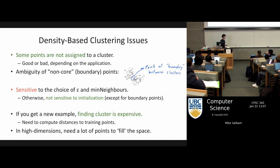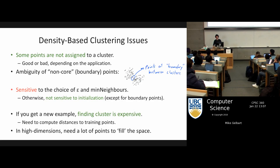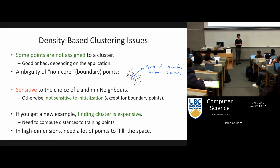Is DBSCAN O(n²)? Yes — someone asked about this on Piazza. Naively it should be, in the sense that you're going through each point and computing the distance from it to all the other points to check which distances are below epsilon. There are clever ways of making it faster and I believe there's some stuff about that in the bonus slides.